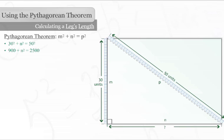The next step is to get N squared by itself on one side of the equation. Remember that what we do to one side of the equation we also have to do to the other side. In this case, we will subtract nine hundred from both sides. So N squared equals sixteen hundred.